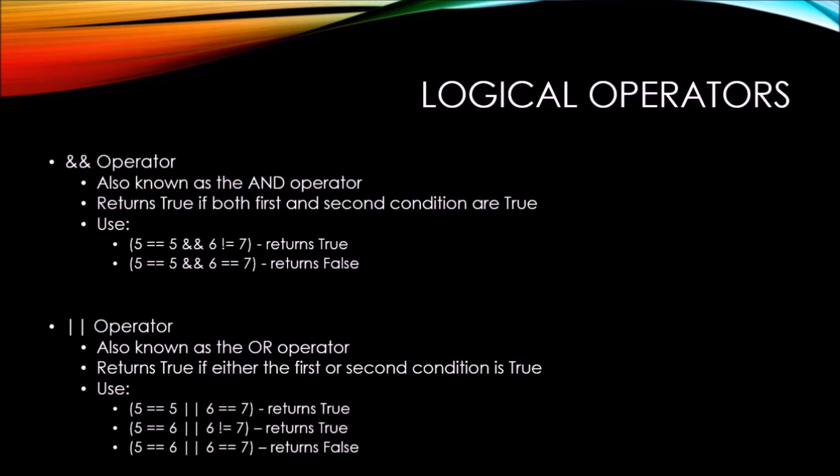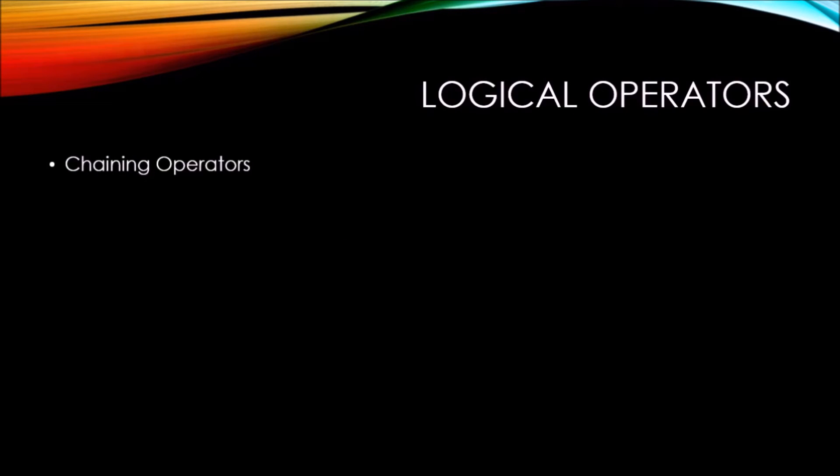Lastly, it's checking if five equals six or six equals seven. Since both of those conditions are false, the OR operator returns false. You can also chain operators and this will come up with some fairly complex logic. Let's take a look at some examples of chaining operators.